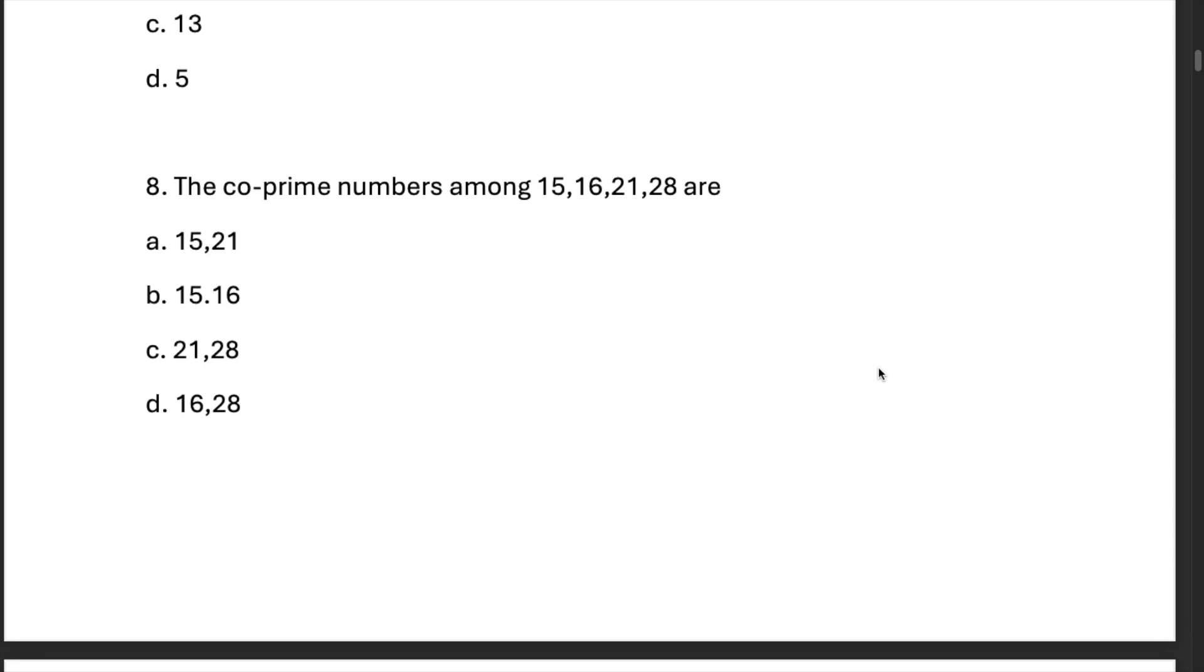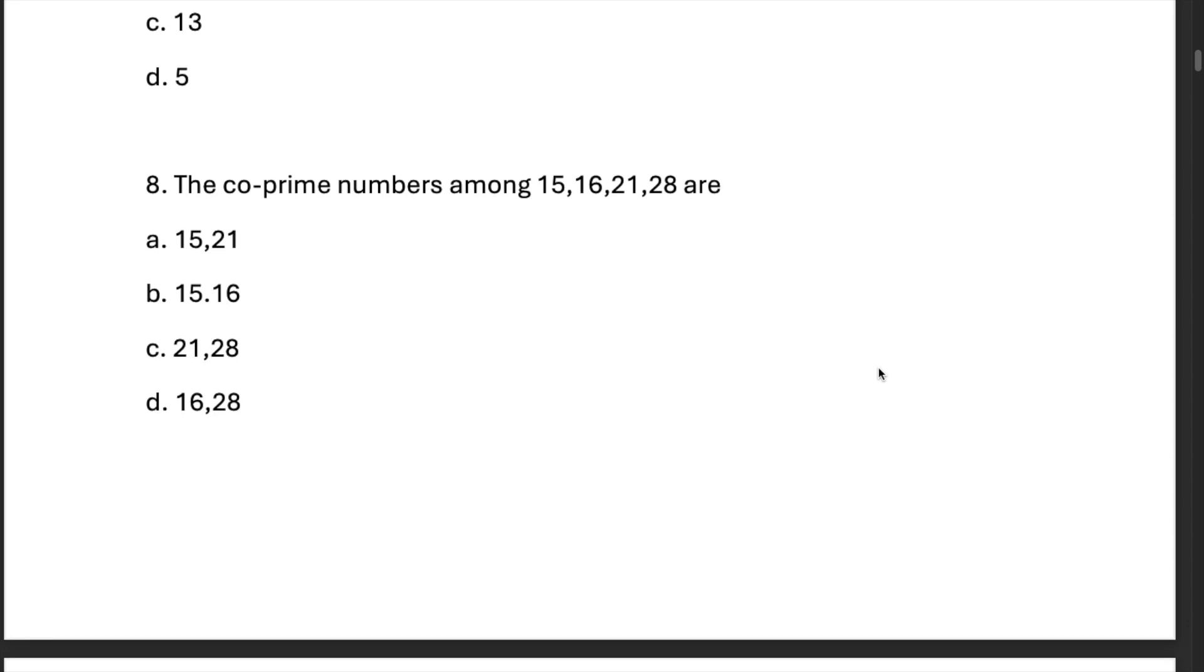The co-prime numbers among 15, 16, 21, and 28 are 15 and 16. There is a comma there, 15, 16. Why? Because these two have an HCF of 1.